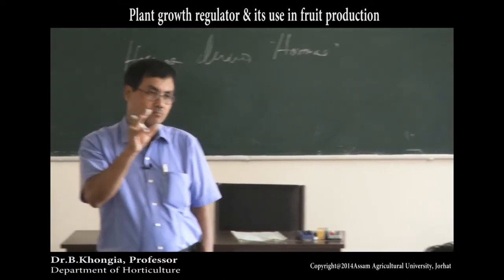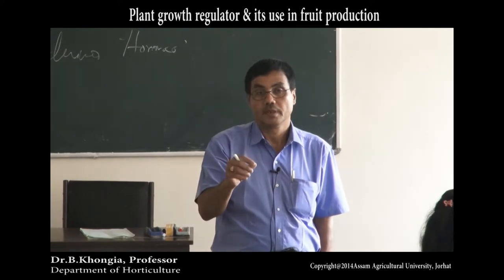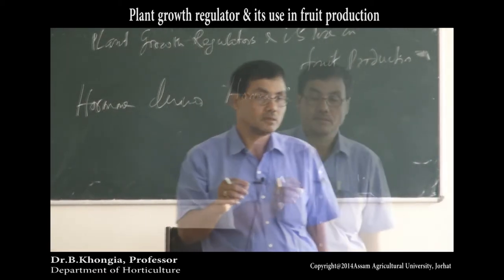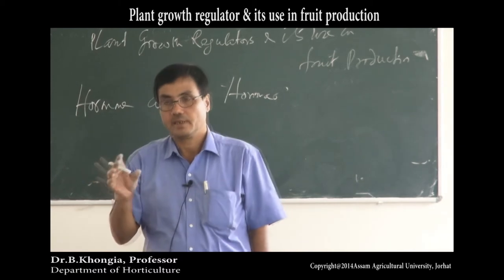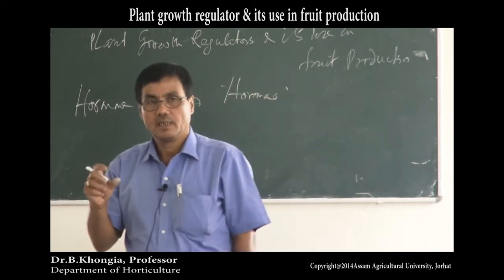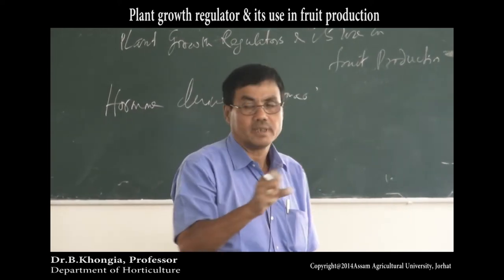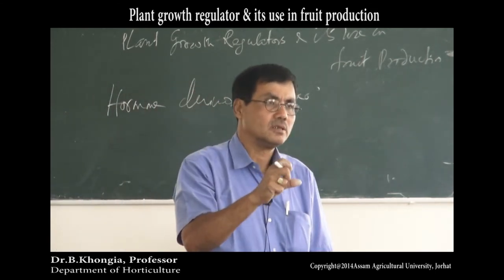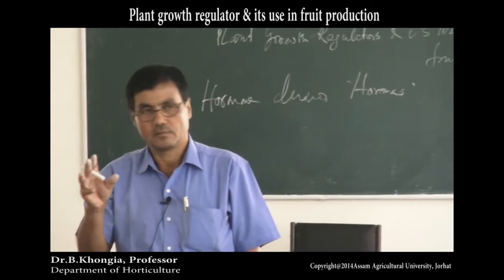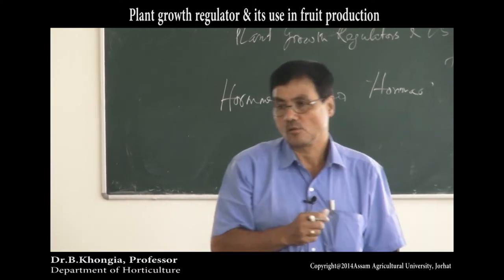Plant growth regulators are specific in action. There are two groups: first, growth promoters — chemicals which promote the growth and development of plants; second, chemicals which suppress or retard plant growth and development.